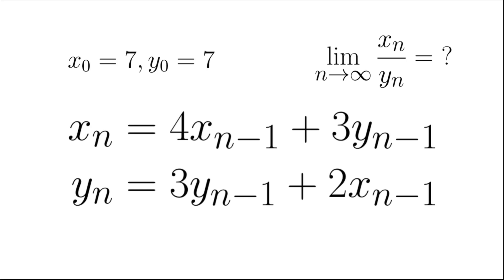For each positive integer n, xn equals 4xn-1 plus 3yn-1 and yn equals 3yn-1 plus 2xn-1. Find the limit of xn over yn as n tends to infinity.